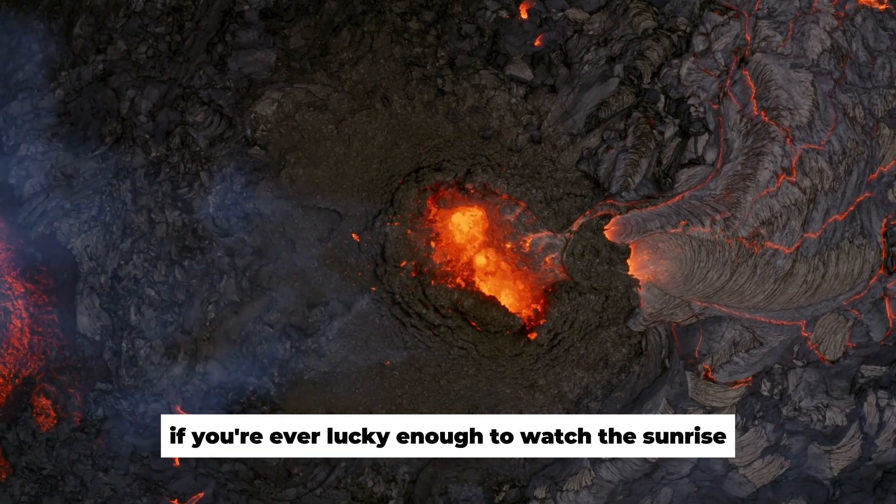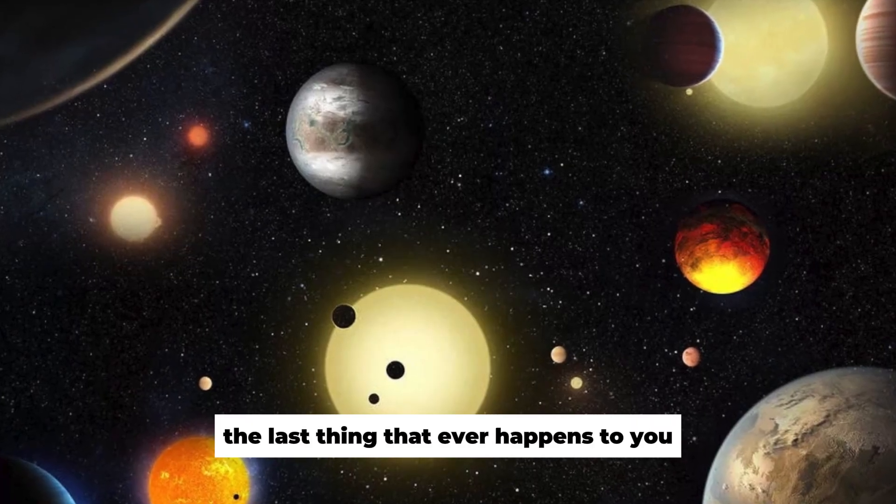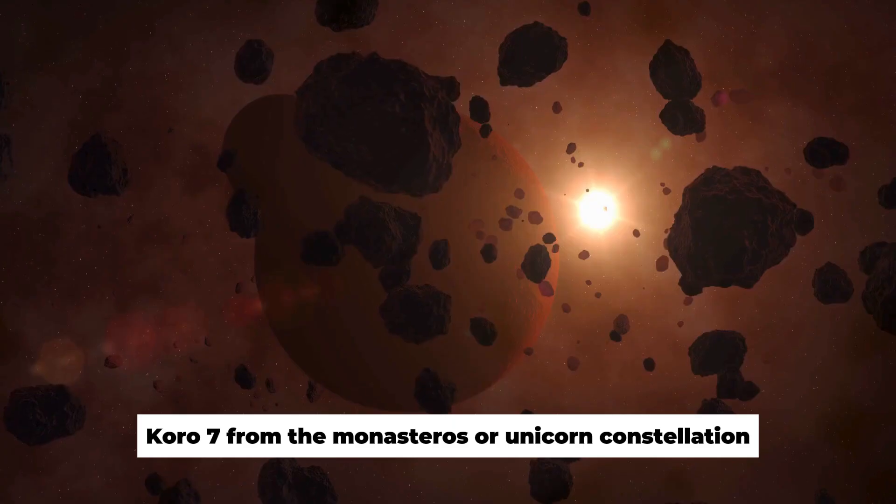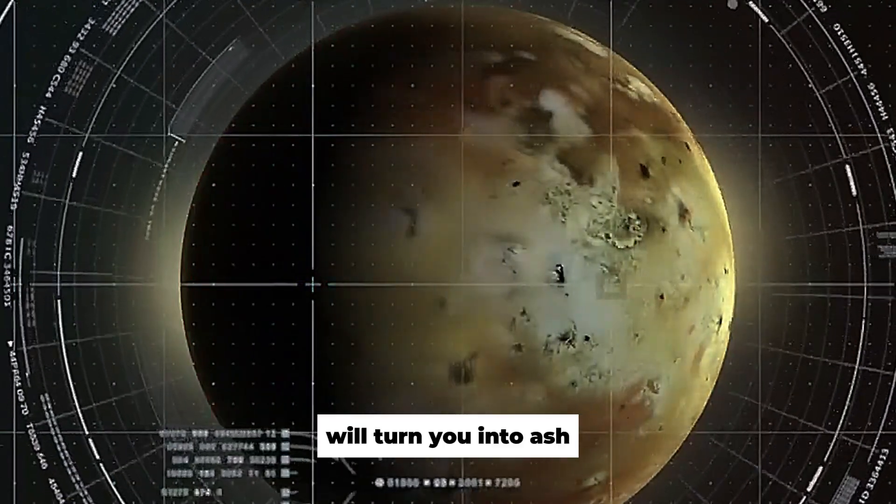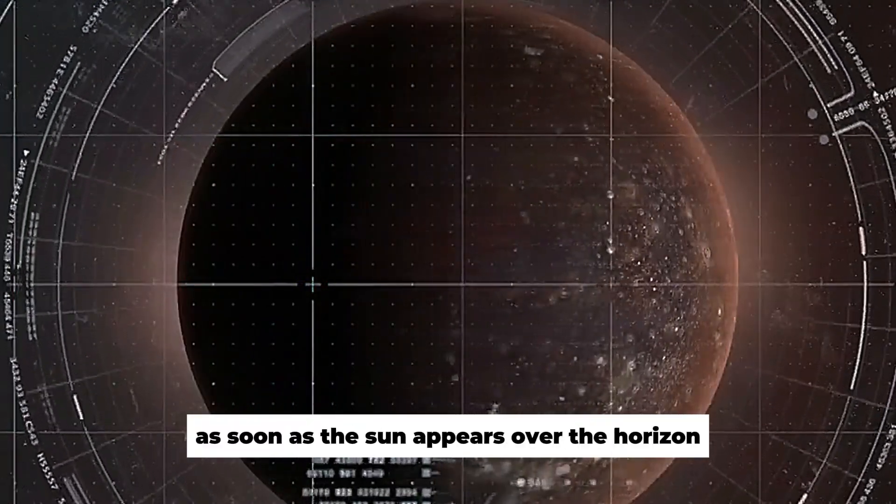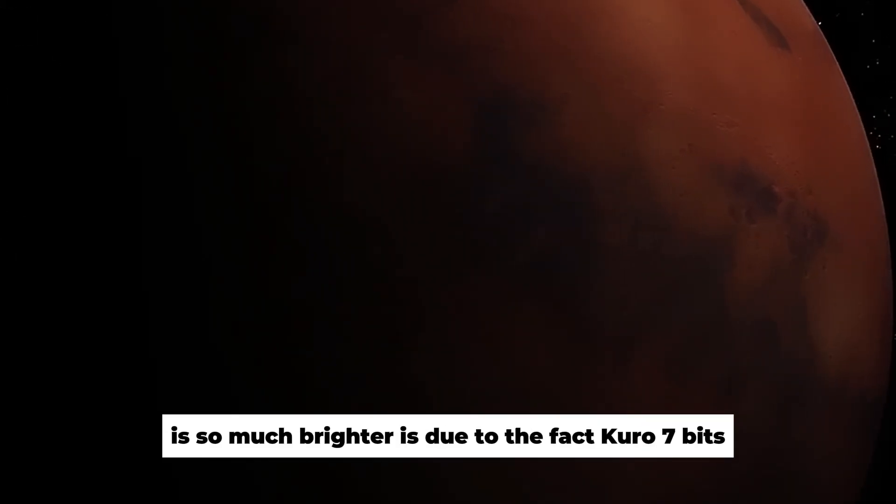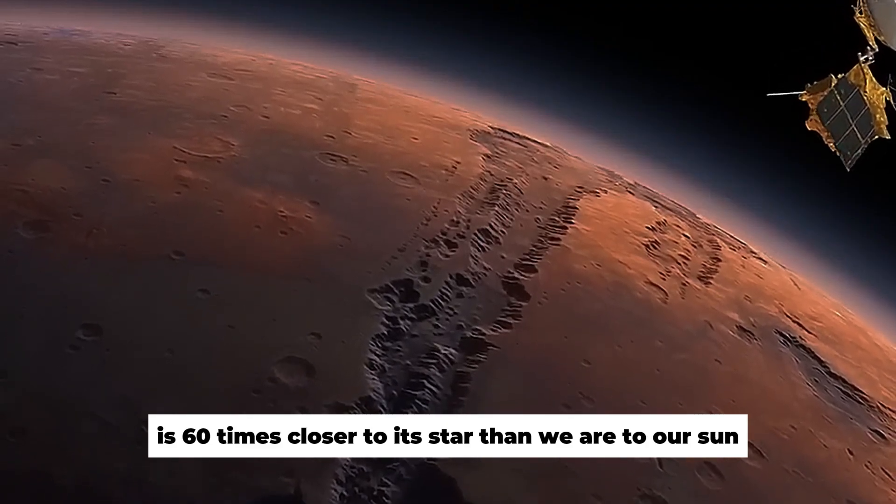If you're ever lucky enough to watch the sunrise on this planet, the sunrise would be the last thing that ever happens to you. The rays of the morning star, Koro 7 from the Monoceros constellation, will turn you into ash as soon as the sun appears over the horizon. The reason sunrise on this planet is so much brighter is due to the fact Koro 7-B is 60 times closer to its star than we are to our sun.